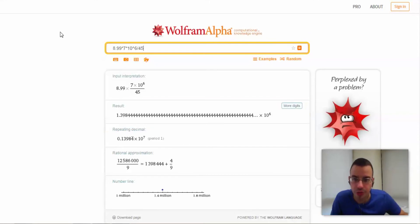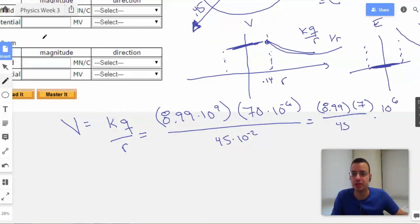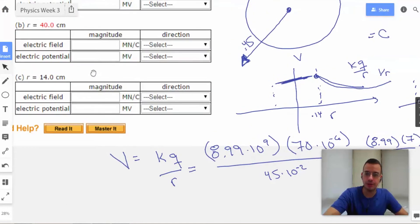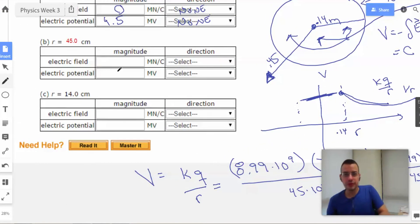This gives me 1.4 times 10 to the 6th. 1.4 times 10 to the 6th. And then 10 to the 6th is just the megavolt. Now we're going to do the electric field.